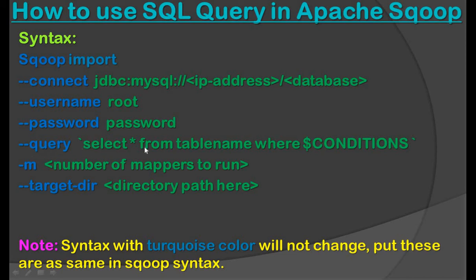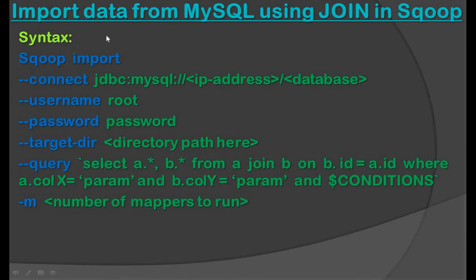Now let's see the next topic: how to import data from MySQL using join in Scoop. As you can see this syntax and this SQL query — it is the same SQL query as we write in MySQL. The only difference is that in MySQL we do not write the dollar condition. Except for the dollar condition, we write all the same things in MySQL, and in Scoop we only add the AND dollar condition with the query.